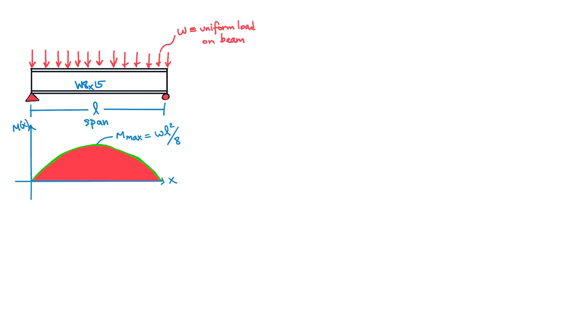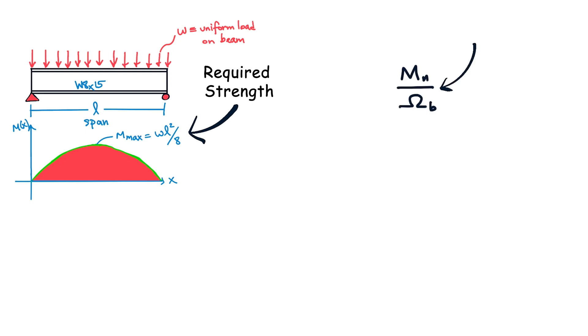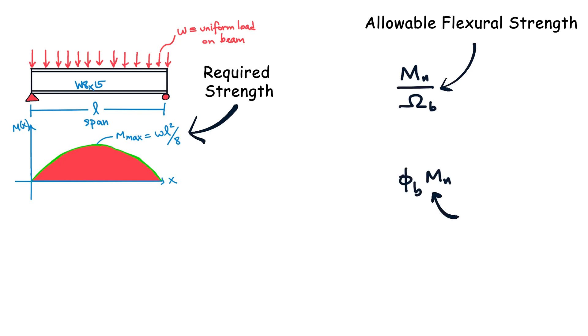To summarize using our earlier example: the moment demand in the section is called required strength. In ASD, the available strength is called allowable flexural strength and equals Mn divided by Ω_b. In LRFD, the available strength is called design strength and equals Mn multiplied by φ_b. This brings us to the end of this video — I hope you found value in it.